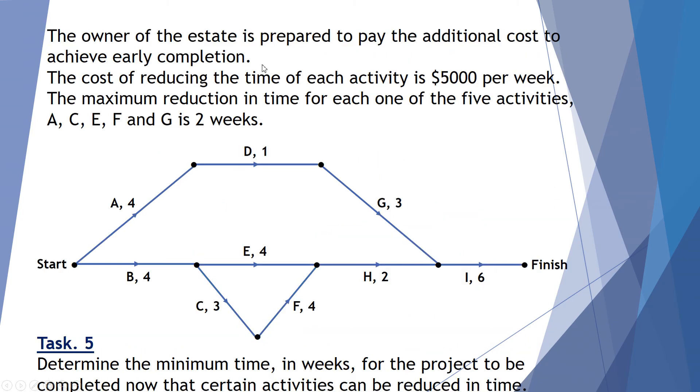The owner of the estate is prepared to pay the additional cost to achieve early completion. The cost to reduce the time of each activity is $5,000 per week. The maximum reduction time for each one of the five activities A, C, E, F and G is 2 weeks. Task 5 is to determine the maximum time in weeks for the project to be completed now that certain activities can be reduced in time.